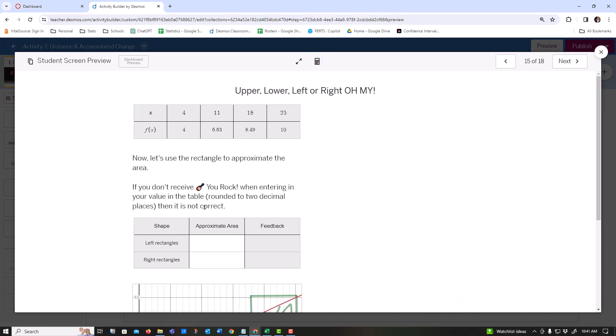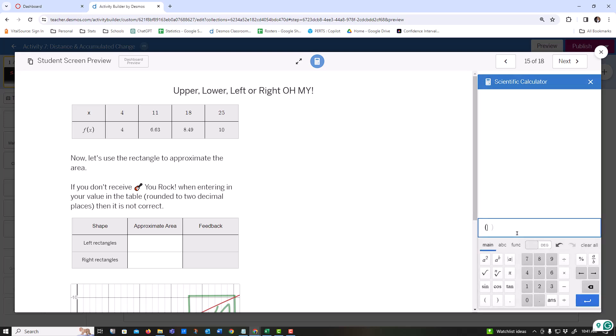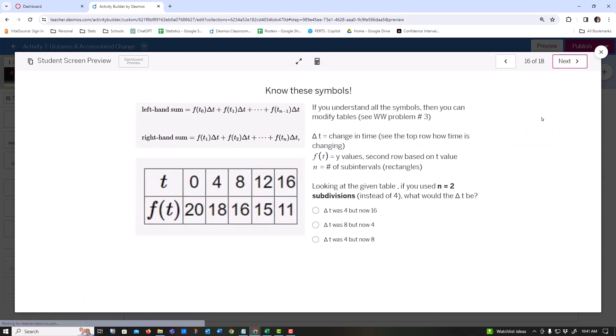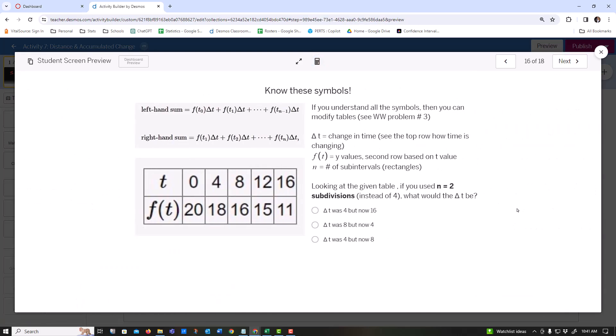To find the approximate area for the left-hand sum, you add 4 plus 6.63 plus 8.49, and multiply by 7 because the change in x was 7. So, 133.84. I'll leave it up to you to find the right rectangles.